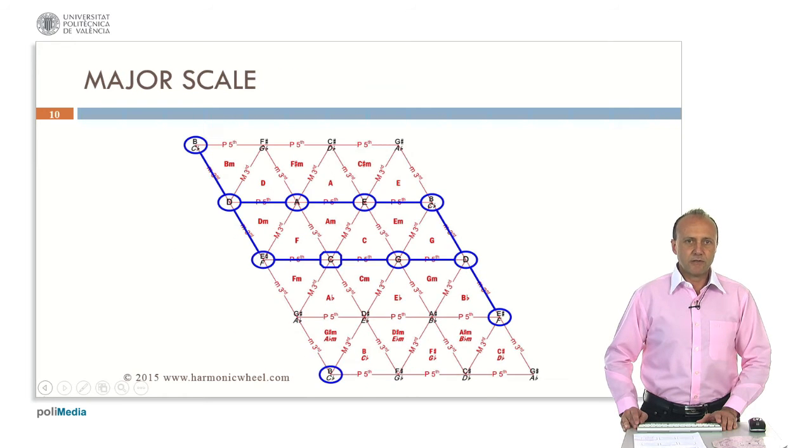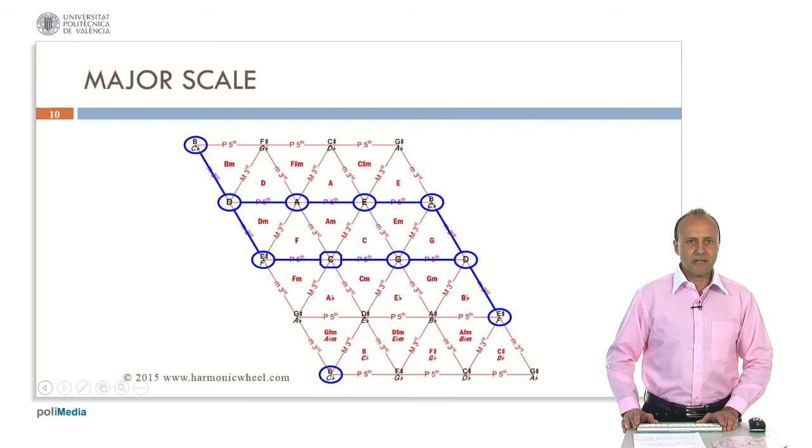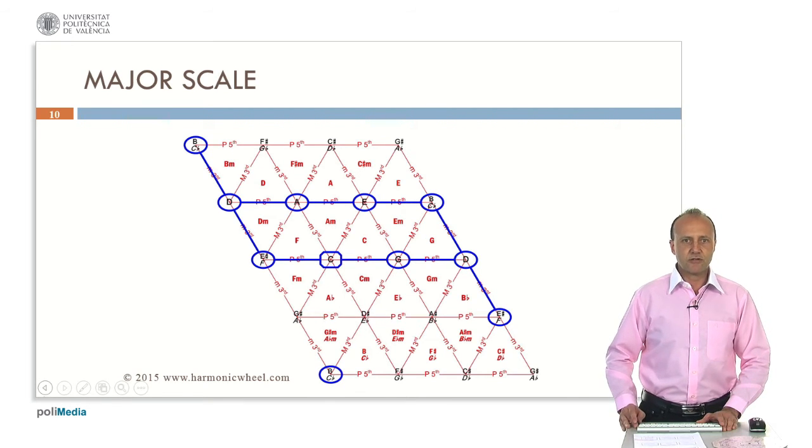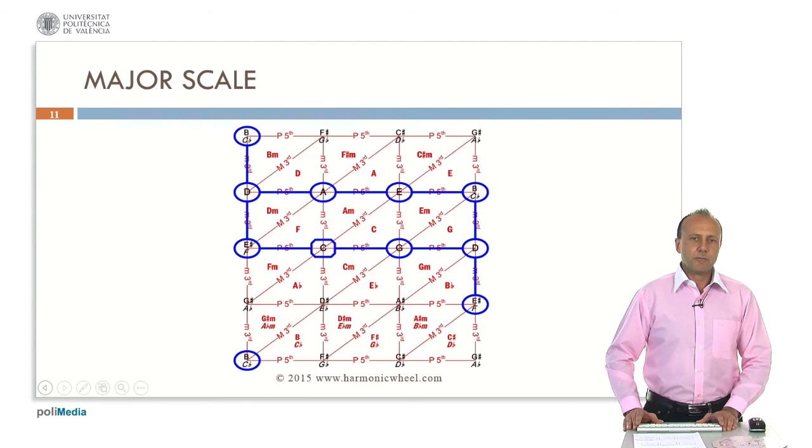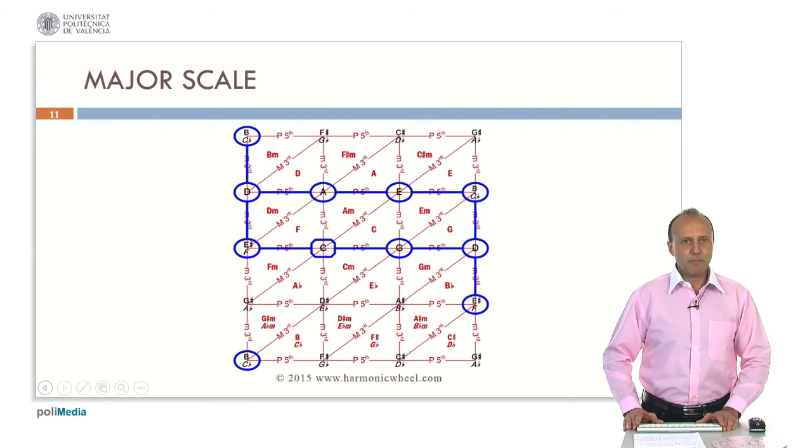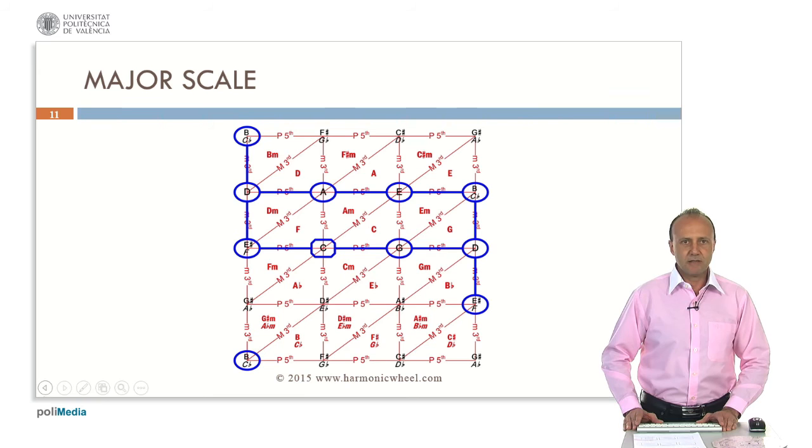So, we select this region and we mark the nodes of the C major scale. The tonic is in a rectangle and the other nodes in circles. We can rectify this figure and we obtain a very interesting result, which is that the major scale is represented by a rectangle. There are three nodes marked outside the rectangle, but they are in fact repeated on the rectangle. In this rectangle, we have exactly the six consonant chords associated to the C major scale.